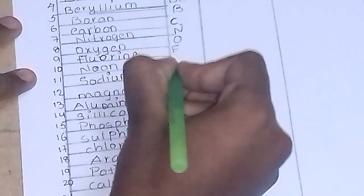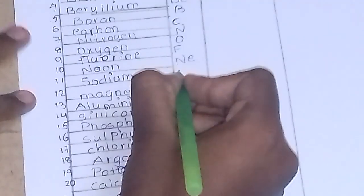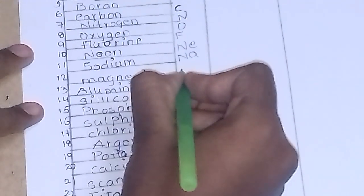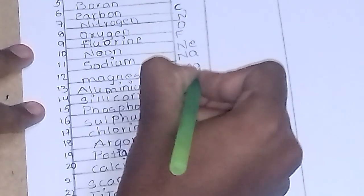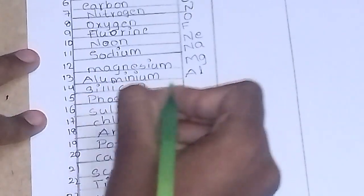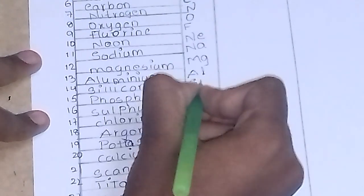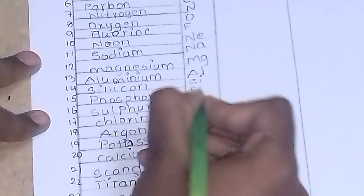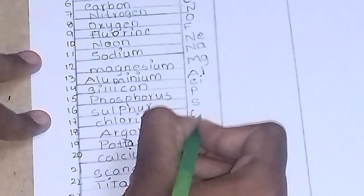Neon, NE. Sodium, it is known as natrium, so it is written as NA. Magnesium, MG. Aluminum, AL. Silicon, SI. Phosphorus, P. Sulfur, S.